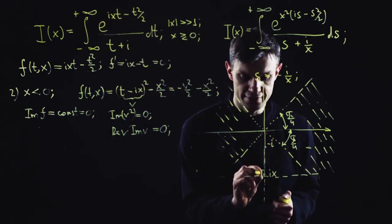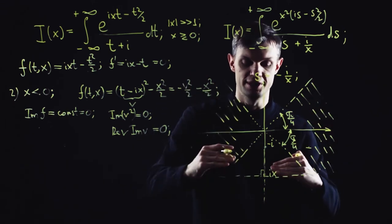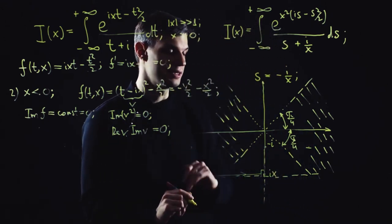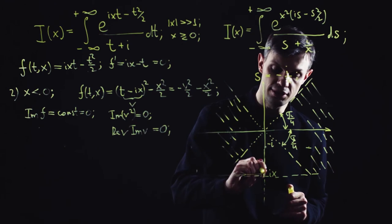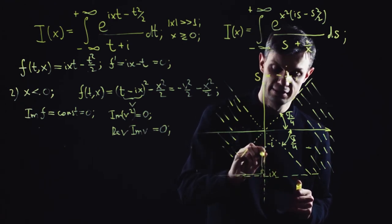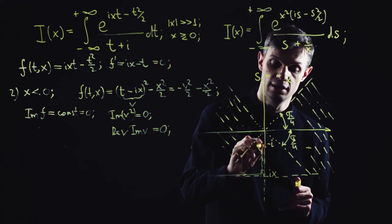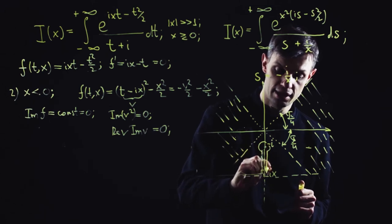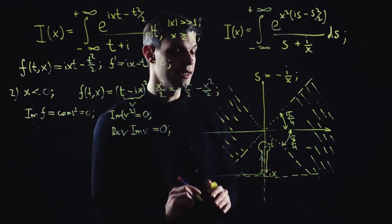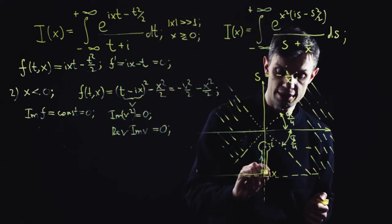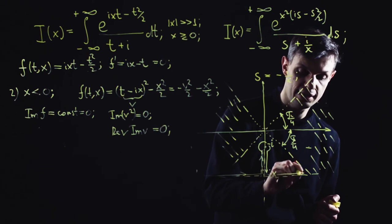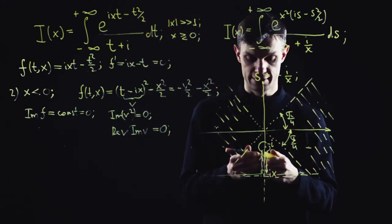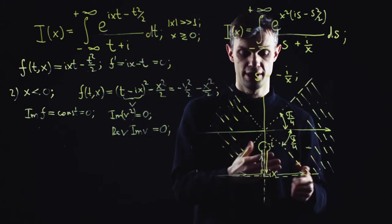The correct deformation would be as follows. You make a parallel displacement of the contour. The contour reaches the saddle along the horizontal steepest descent line, goes along the stationary phase line, circles around the pole, goes down again along the steepest descent line from the pole, and then continues along the same stationary phase line along the steepest descent line from the saddle. That's the correct deformation of the contour in case of negative x.